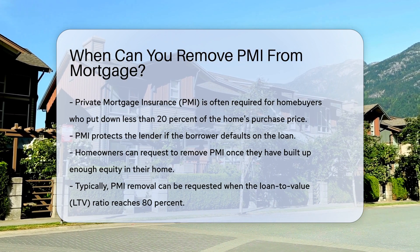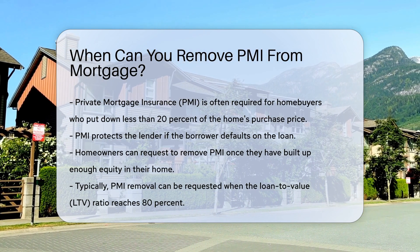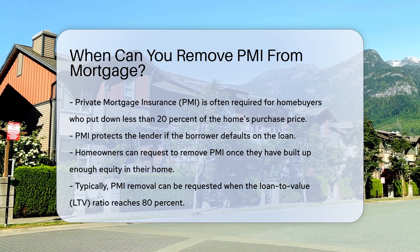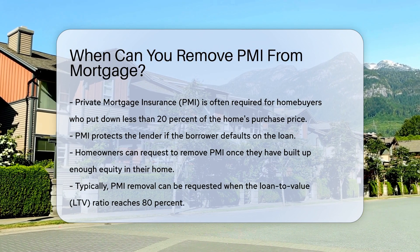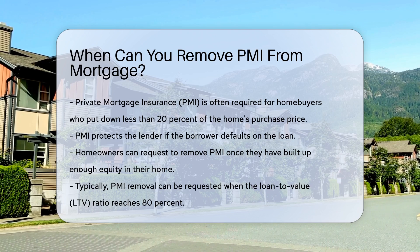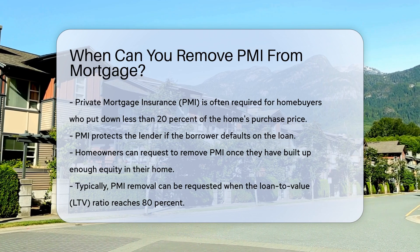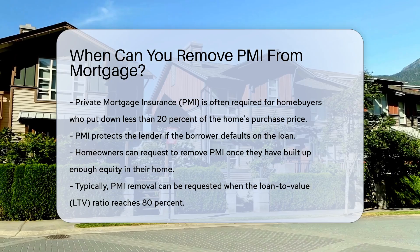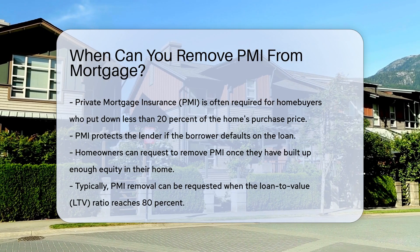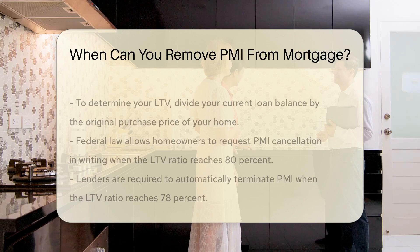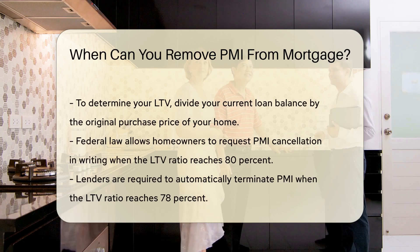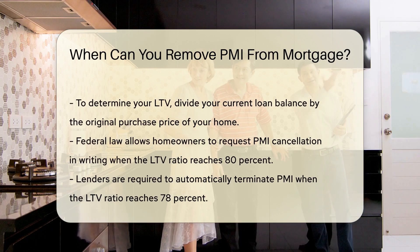PMI protects the lender if the borrower defaults on the loan. Homeowners can request to remove PMI once they have built up enough equity in their home. Typically, this occurs when the loan-to-value LTV ratio reaches 80%. To determine your LTV, divide your current loan balance by the original purchase price of your home.